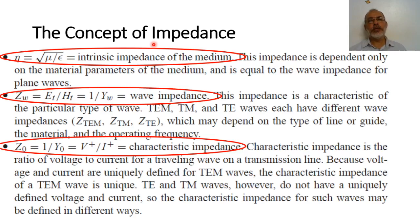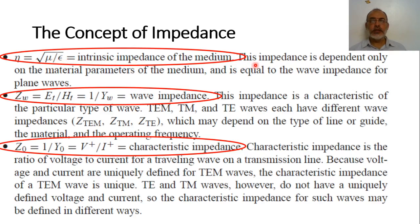We have different types of impedances. The first type is the intrinsic impedance. The intrinsic impedance of the medium is the ratio of the transverse electric field to the transverse magnetic field in transverse electromagnetic waves propagating inside this medium. This intrinsic impedance equals square root of mu over epsilon, and usually has the notation eta. So eta, which equals square root of mu over epsilon, is the intrinsic impedance of the medium. This impedance depends only on the material parameters of the medium and is equal to the wave impedance of the plane wave.